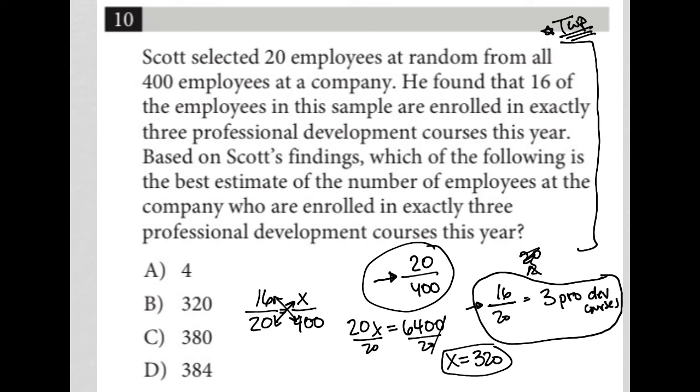So I'd expect 320 of the 400 employees to also be enrolled in exactly three professional development courses this year because 320 over 400 is an equivalent proportion or ratio to 16 out of 20. And that's basically what the question is asking us to determine.